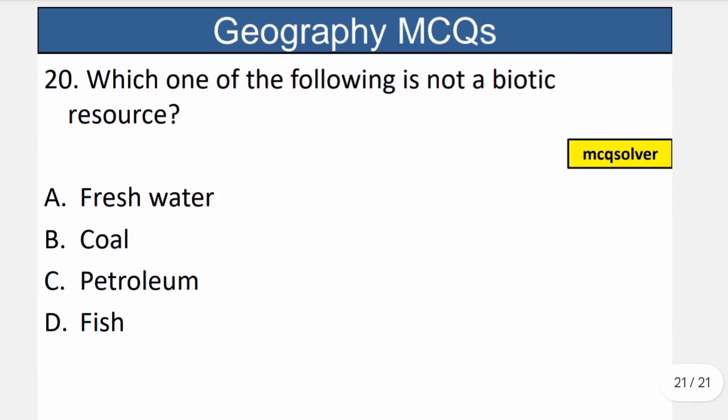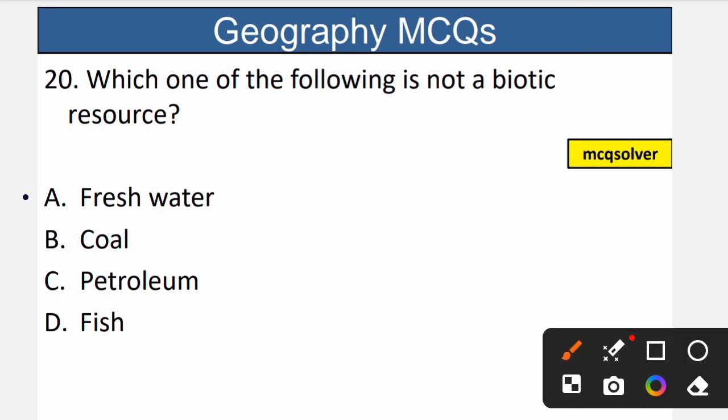Question number 20: Which one of the following is not a biotic resource? Biotic resources are those we receive from living organisms. The correct option is A — fresh water. Fresh water is not a biotic resource.